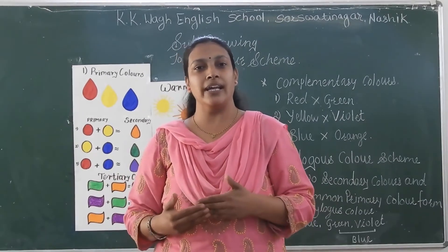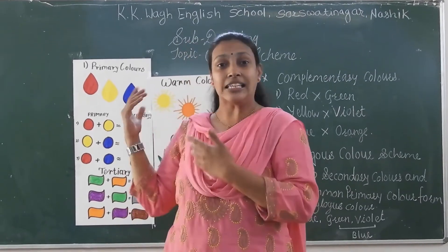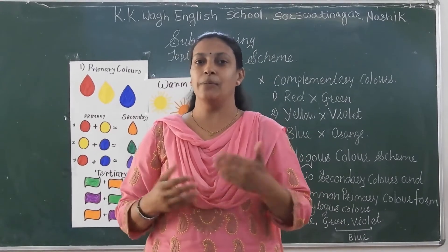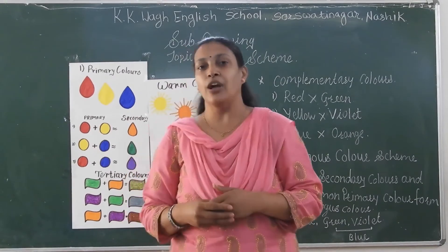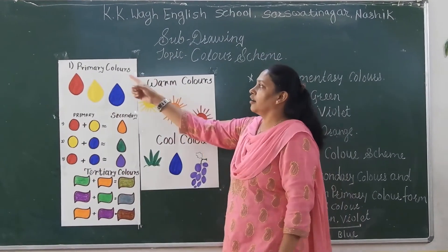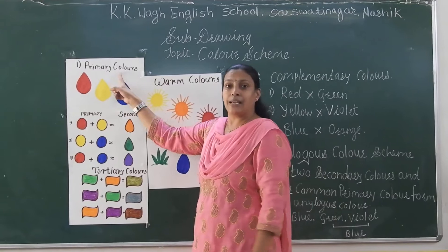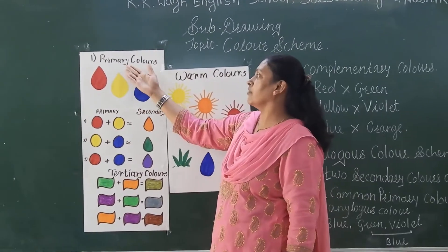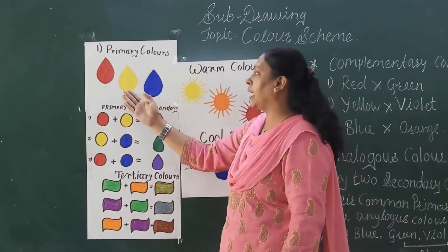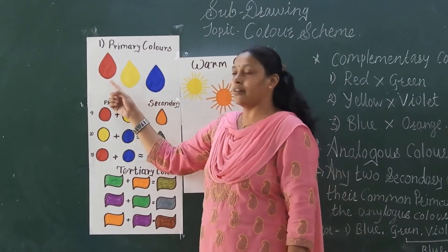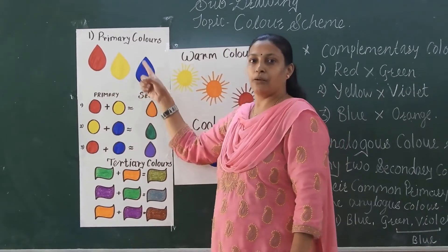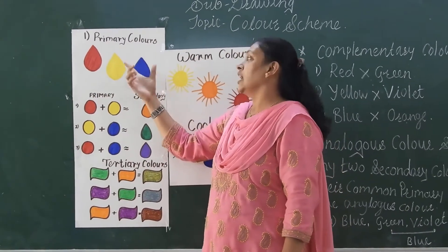So, what are we going to learn about today? We are going to learn about the color scheme. These are the basic colors — we call them primary colors. The primary colors are red, yellow, and blue. These three are primary colors.